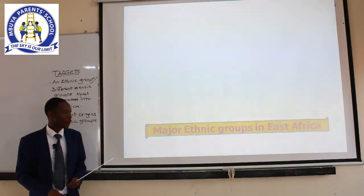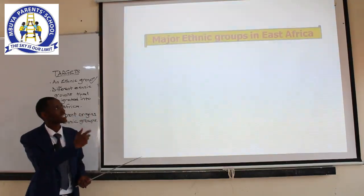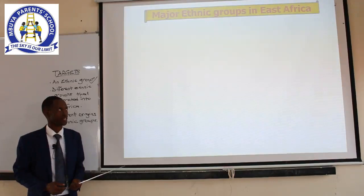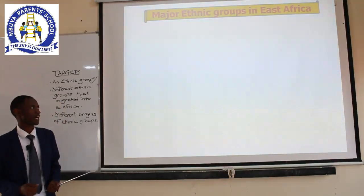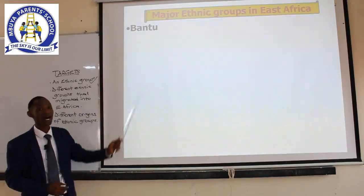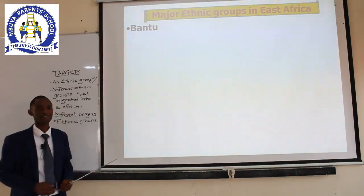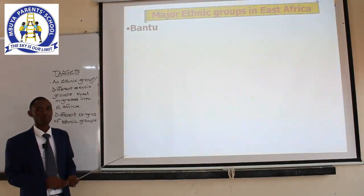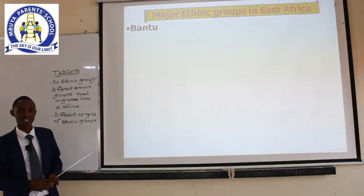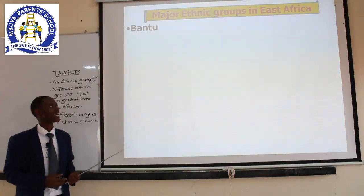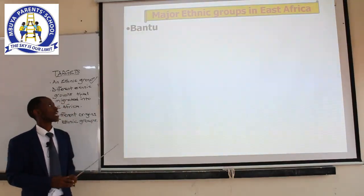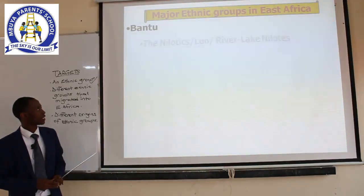The next point: we have the major ethnic groups in East Africa — that is our main focus today. Let us list them. Number one is Bantu — why Bantu first? Bantu is the largest ethnic group in East Africa. Even in Uganda, Bantu is the largest, so note that it is number one.